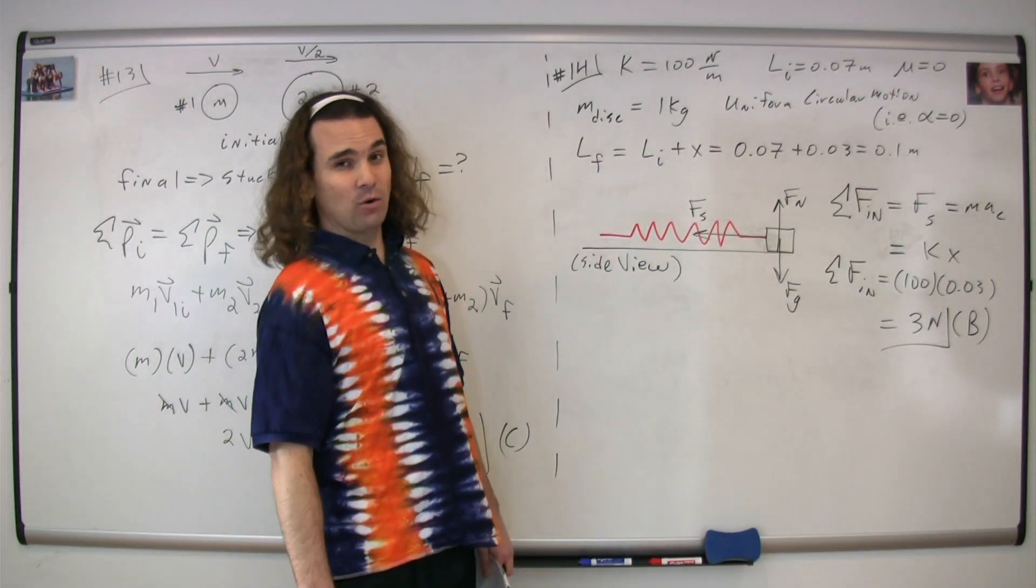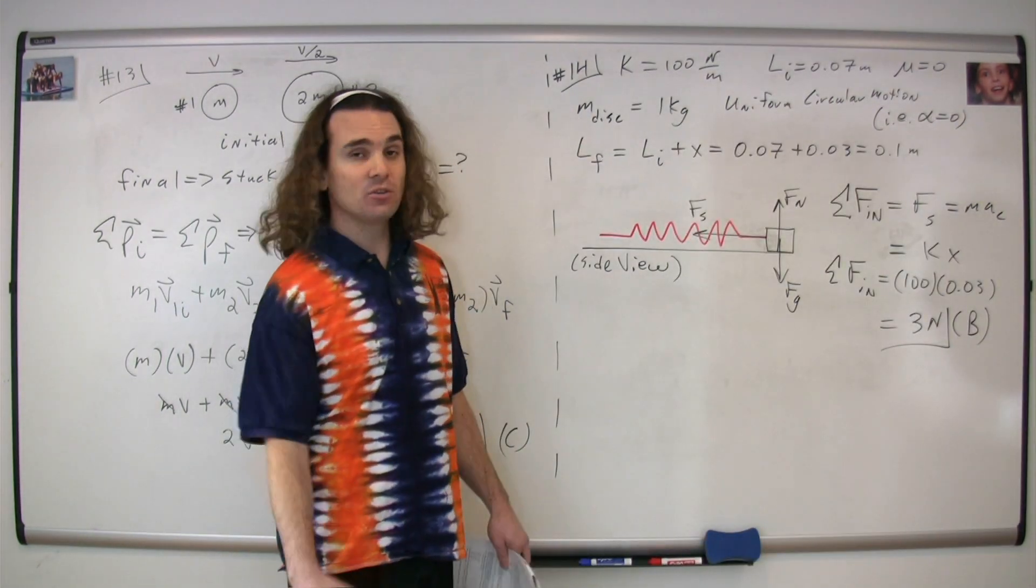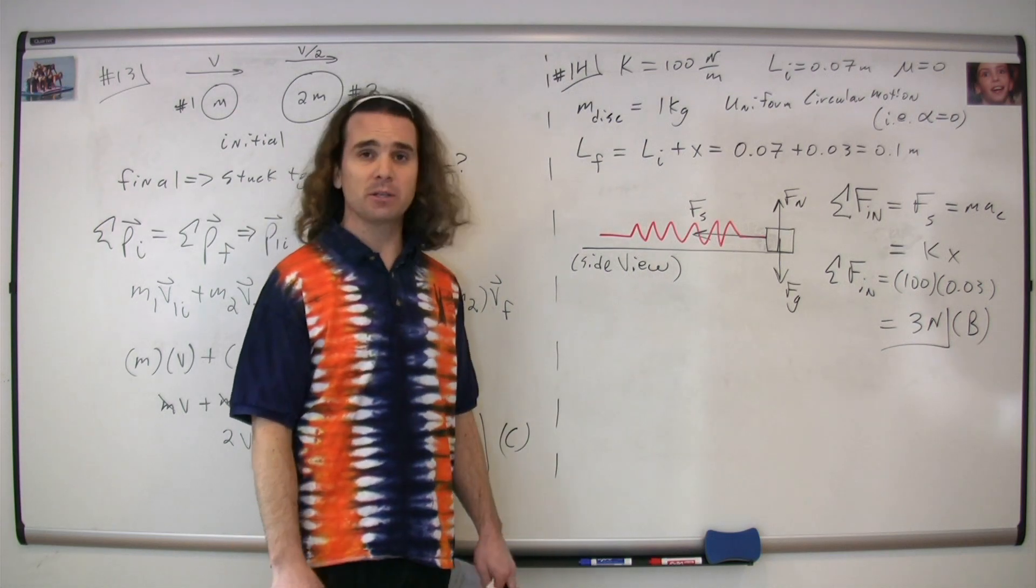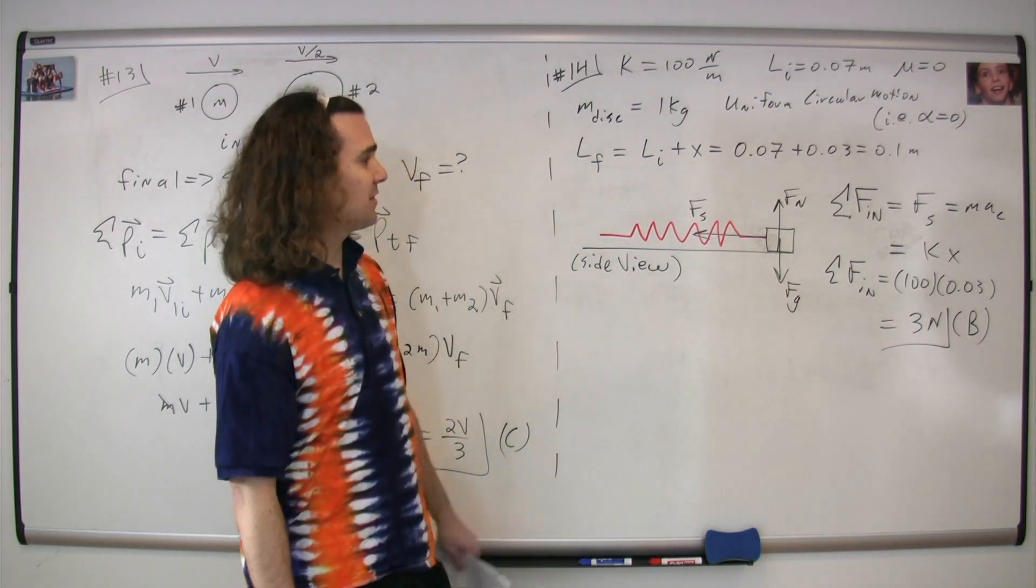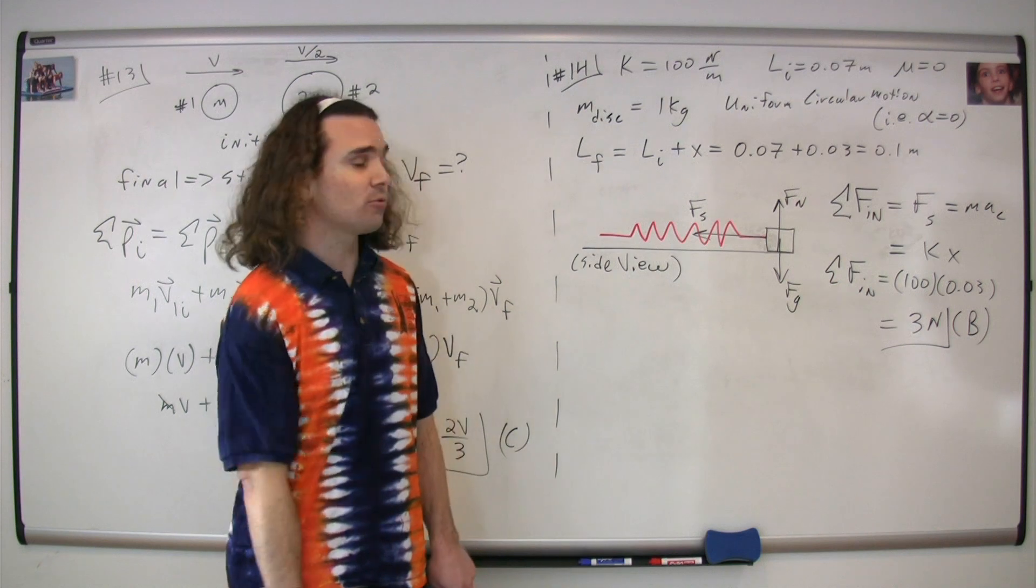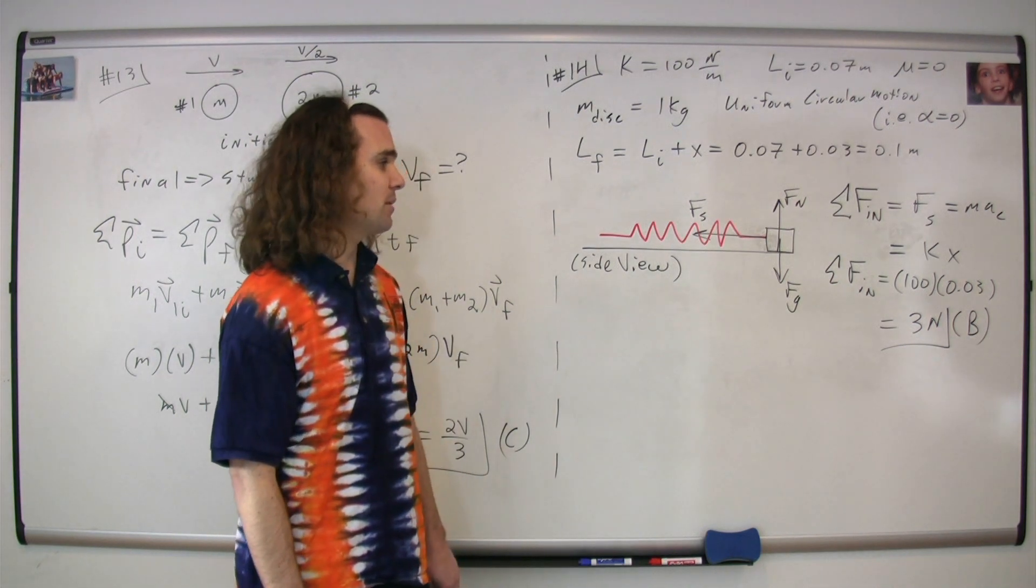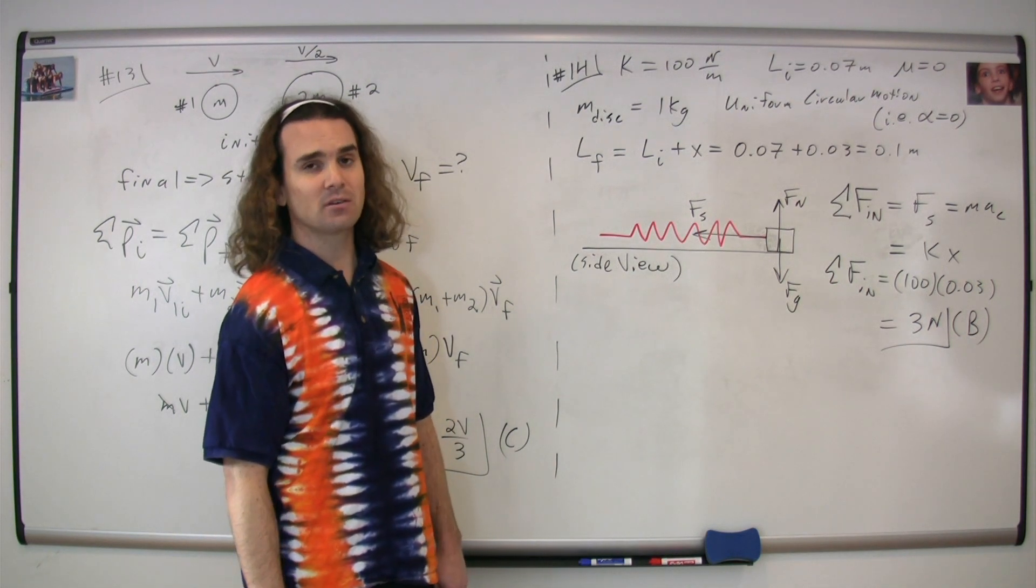So we substitute in the equation for the force of the spring, the magnitude of it, the spring constant times the displacement from the equilibrium position. And we get that the net force in the r-direction, the centripetal force is 100 times 0.03 or three newtons. The correct answer is B.